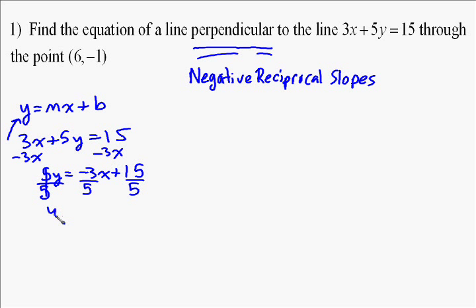So the slope of the line we're trying to find a perpendicular line to is negative 3 fifths. To find the negative reciprocal for my slope, take negative 3 fifths, turn it over so it's negative 5 over 3, and then change the sign to make it a negative reciprocal. So the slope we're looking for is 5 over 3.